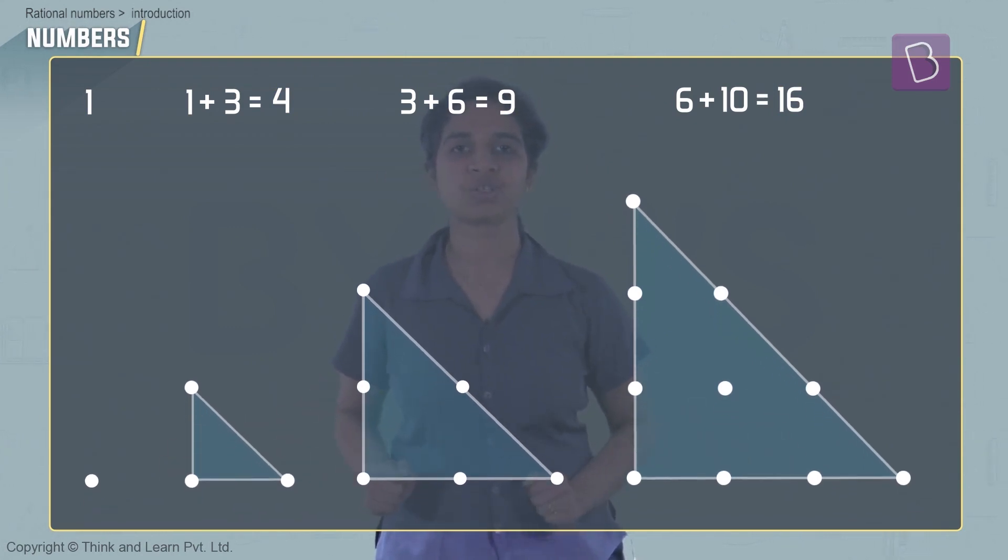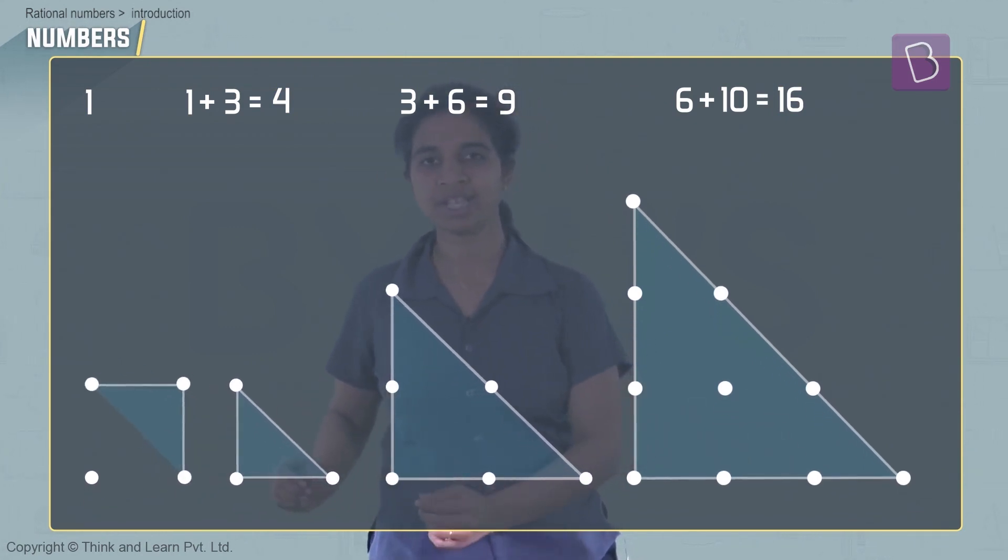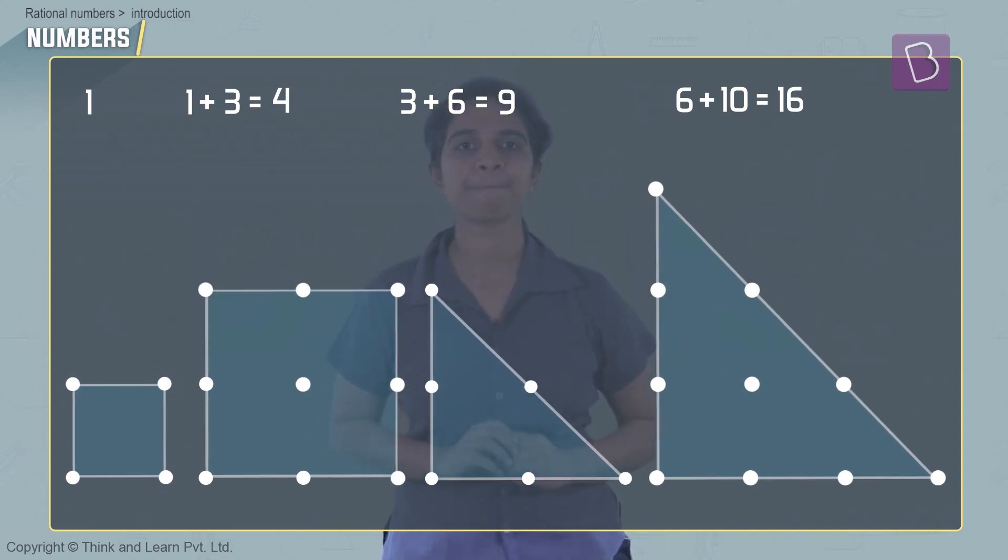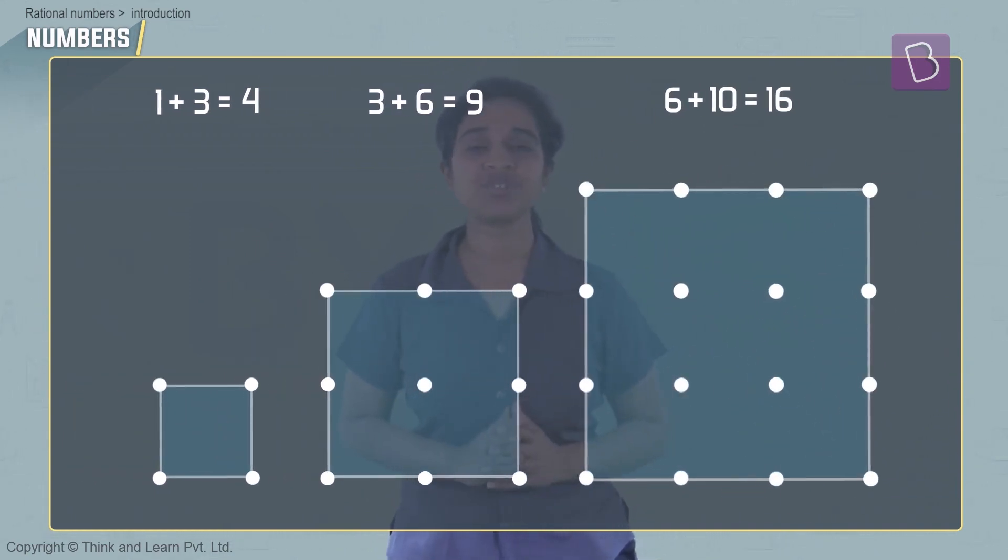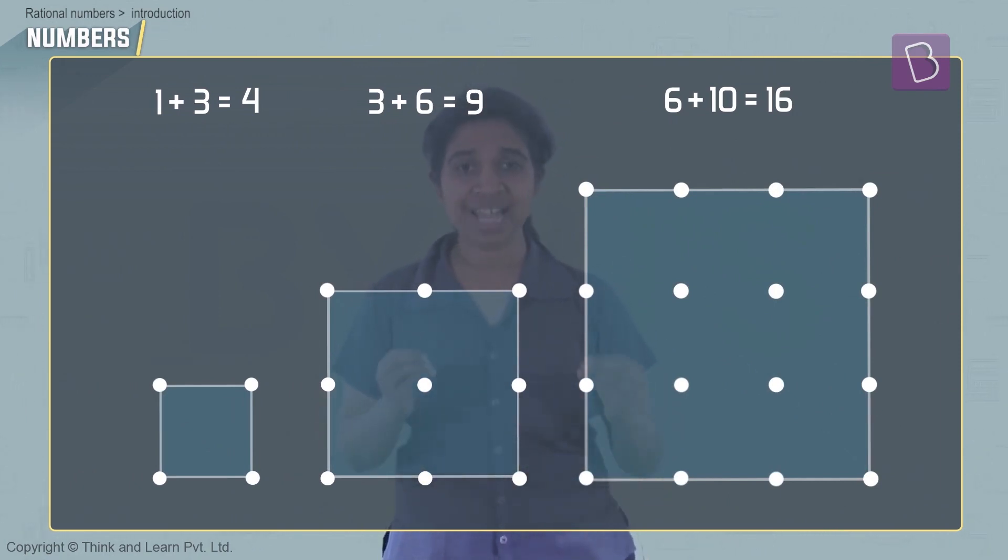You can see that in the figure also. What we did here: 1 + 3, so 1 and 3 give you 4. I'm just rotating the triangle and putting it on top. 3 and 6 gives you 9. 6 and 10 gives you 16.